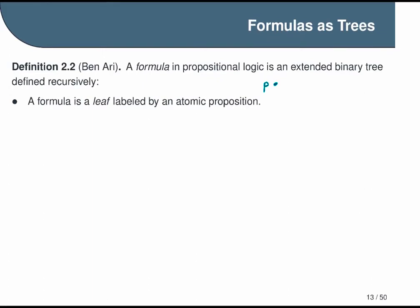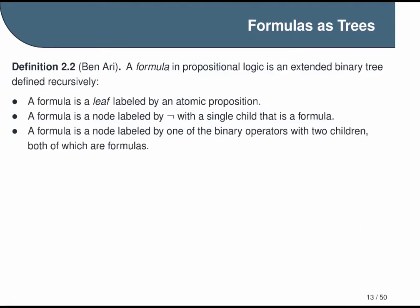A formula is also a node labeled by the not symbol with a single child that is also a formula. So for example, this is a formula. And the third part of our definition, a formula is a node labeled by any one of the binary operators, for example, we could use the implication with two children, both of which are formulas.